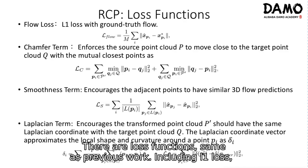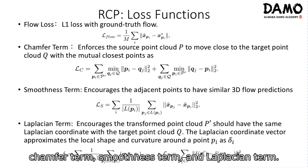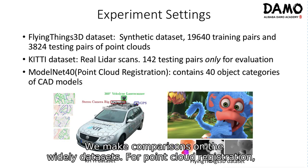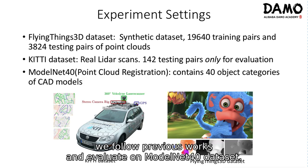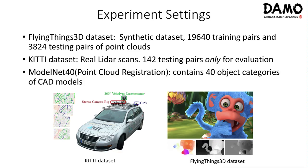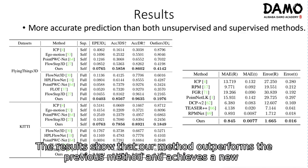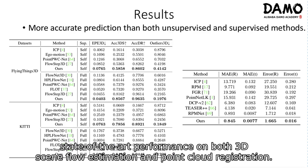The loss functions, same as previous work, include L1 loss, chamfer term, smoothness term, and Laplacian term. We make comparisons on widely-used datasets. For point cloud registration, we follow previous works and evaluate on the ModelNet40 dataset. The results show that our method outperforms previous methods and achieves new state-of-the-art performance on both 3D scene flow estimation and point cloud registration.